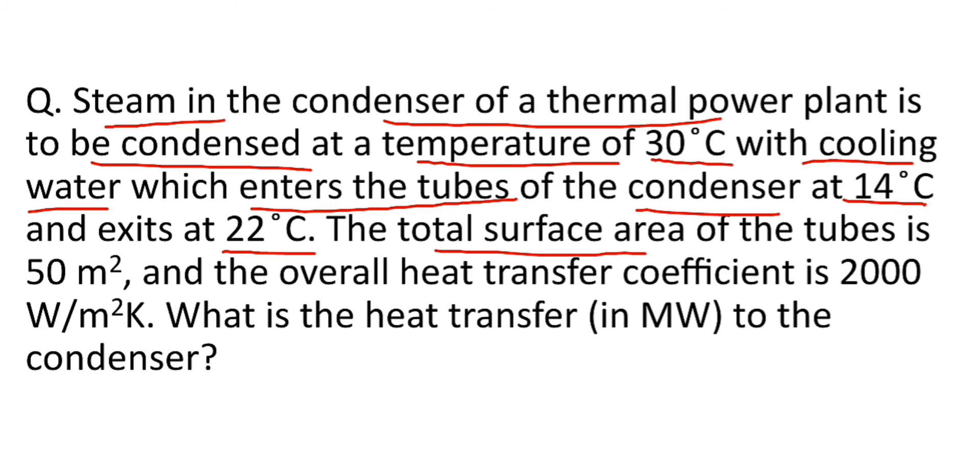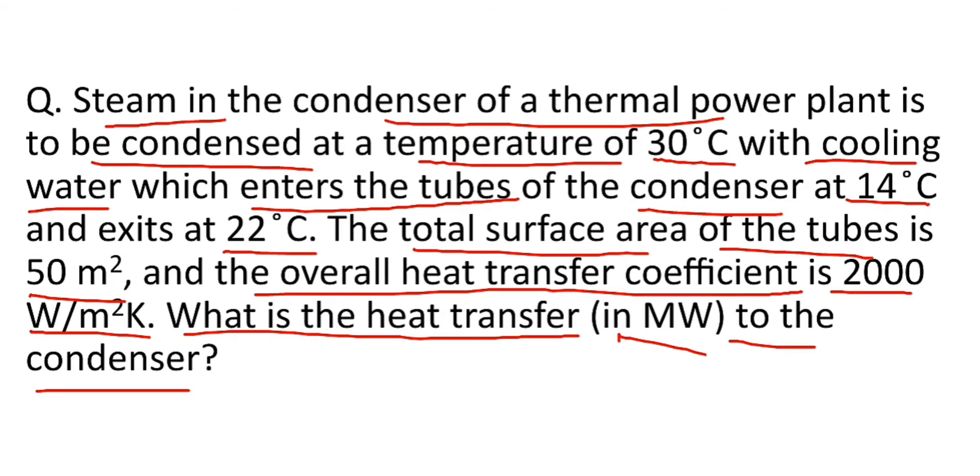The total surface area of tubes is 50 meter square, and the overall heat transfer coefficient, that is U, is 2000 Watt per meter square Kelvin. And we have to find what is the heat transfer to the condenser. That means we have to find how much heat has transferred during condensation of steam. I hope you have understood till now.